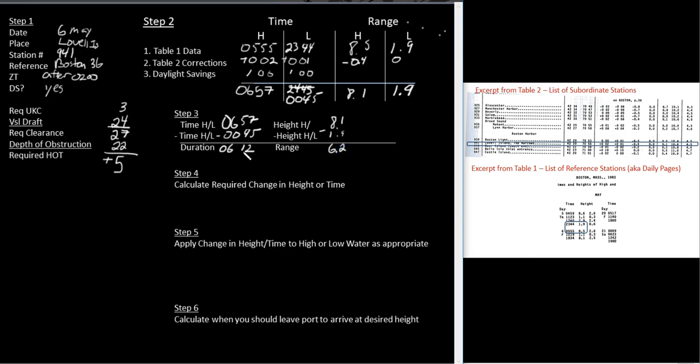Now, I'm going to need this data to enter into the table three. I'm going to need this, I'm going to need this, the duration, the range, and I need my height of tide. These are three of the variables. Table three is comprised of four variables. You will always have three, and you'll have to extract the fourth. So let's do this.